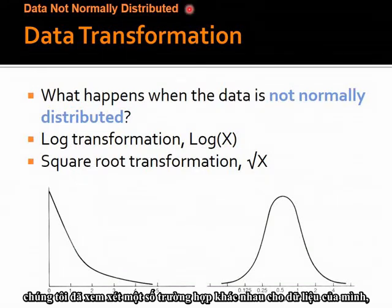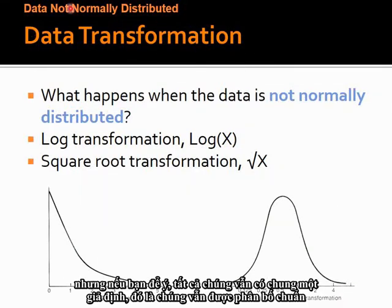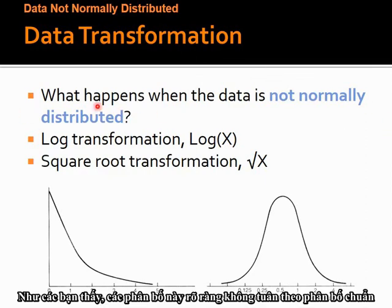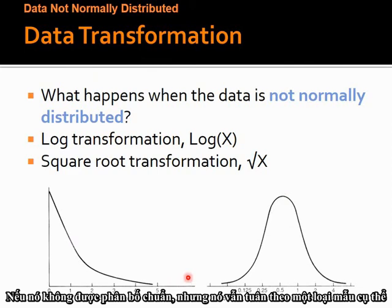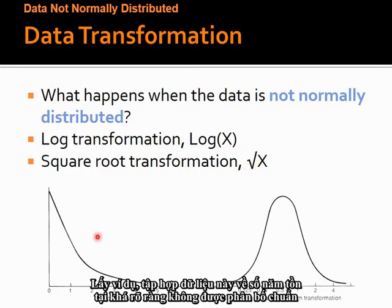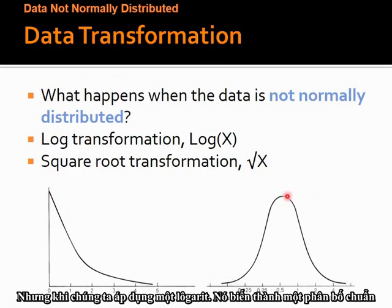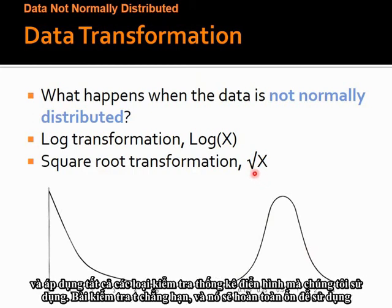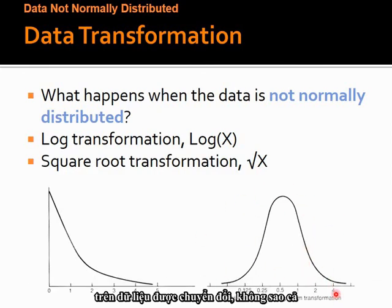We've looked at scenarios where all data was still normally distributed. What happens if the data is not normally distributed? If it's not normally distributed but still follows a particular pattern, we can try to transform the data — for example, applying a log transformation or square root transformation. Take survival years data: it's quite clearly not normally distributed, but when we apply a logarithm, it turns into a normal distribution. We can then apply all the typical statistical tests like the t-test upon the transformed data.